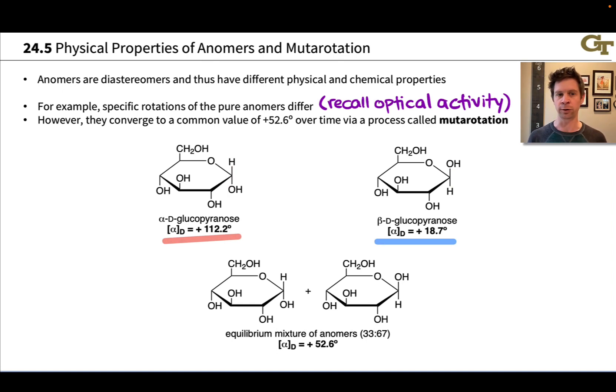But interestingly, if we start with, for example, a sample of pure alpha-D anomer and put that in solution and allow it to equilibrate over time, we find that the specific rotation changes from the initial value of positive 112.2 degrees to an equilibrium value of 52.6 degrees. And here's another interesting observation: if we do the same thing with the beta anomer, beta-D-glucopyranose, it starts out with a specific rotation of positive 18.7 degrees but converges to the same equilibrium rotation when in solution. So whether we start with pure alpha or beta anomer, we converge to an equilibrium mixture of the two anomers that's somewhere in the middle, as suggested by this average specific rotation that is in between the specific rotations of the two pure anomers.